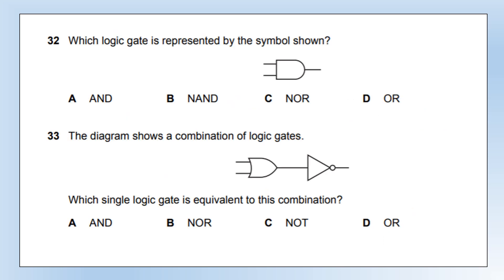Which logic gate is represented by the symbol shown? That is an AND gate — you just have to know that. The next symbol is an OR gate followed by a NOT gate, giving a NOR gate.